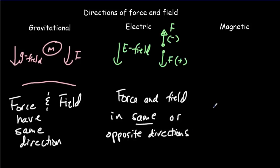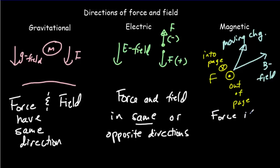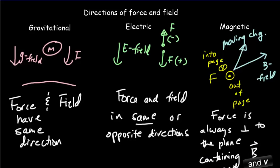The more complex case is the magnetic field. Suppose our B field is in one direction, but we also have to consider the direction of the moving charges, which have a direction of their own. The force ends up being either out of the page or into the page — perpendicular to the plane containing B and V, where V is the velocity of the moving charges. So we end up with a more complicated perpendicular relationship in the case of the magnetic field.